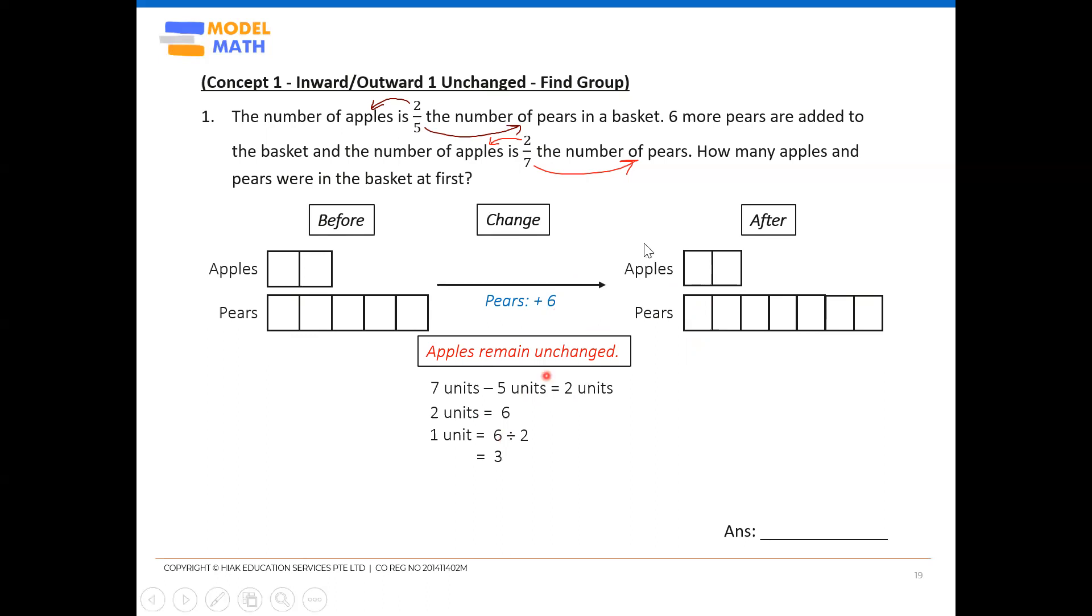Once you have one unit, re-read the final question. They ask how many apples and pears at first. At first means look at your before. Just count all the units - 1, 2, 3, 4, 5, 6, 7. There's seven units at first. So work out the value of seven units. That will be 21 fruits.